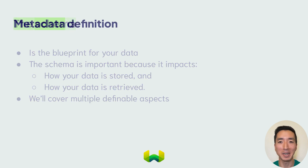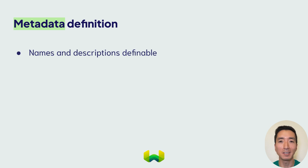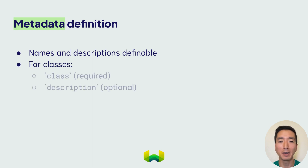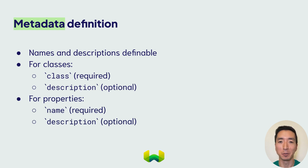First, we have the metadata definition, where you can define names and descriptions for your classes and properties. Defining these will help you and others understand the data structure. For classes, we have class, which is required, and description, which is optional. For properties, we have name, which is required, and description, which is optional.